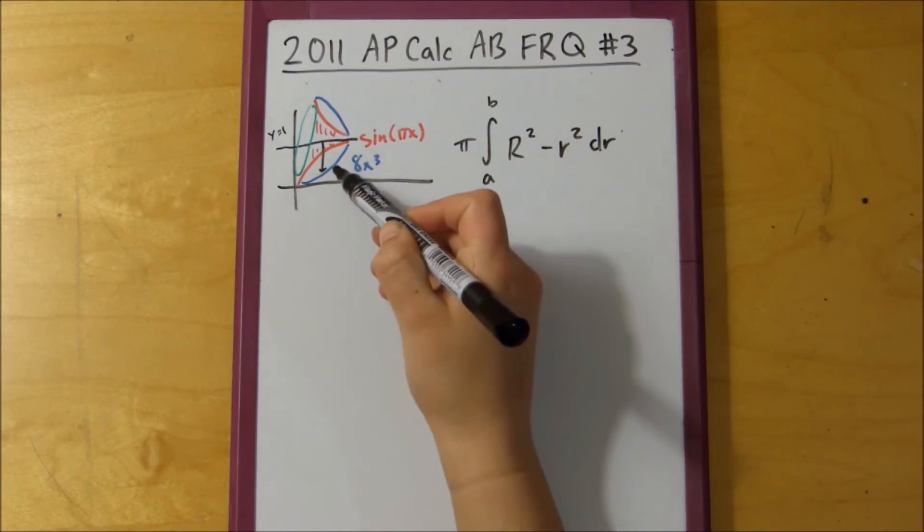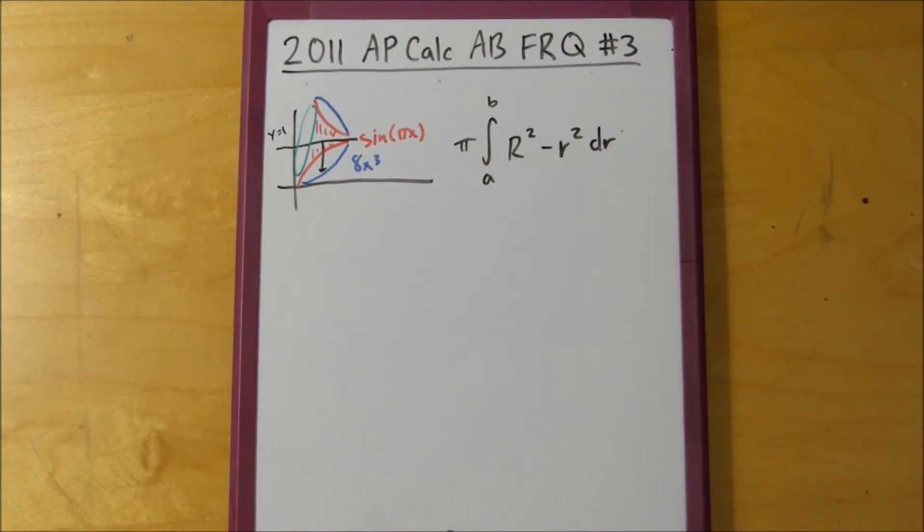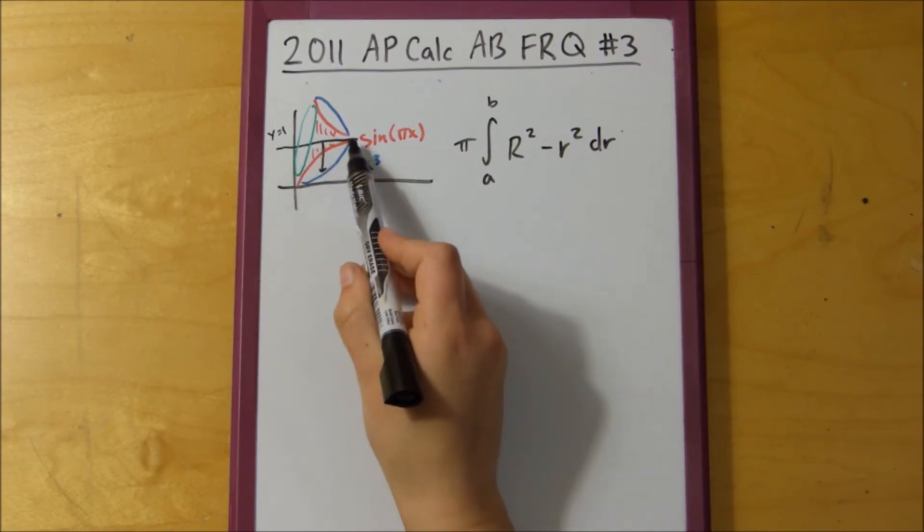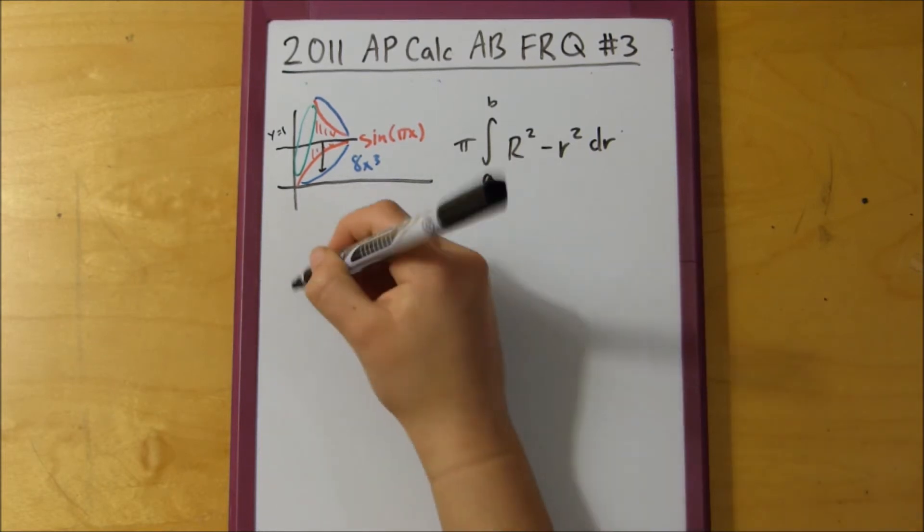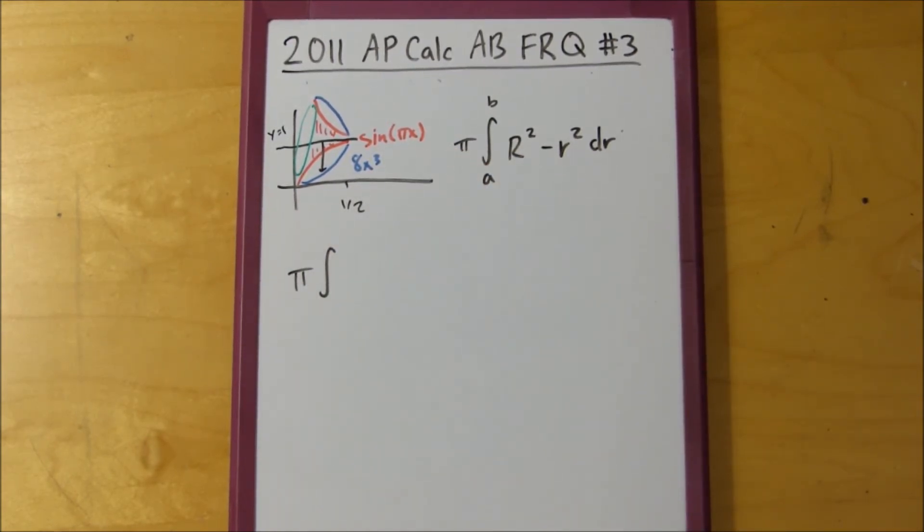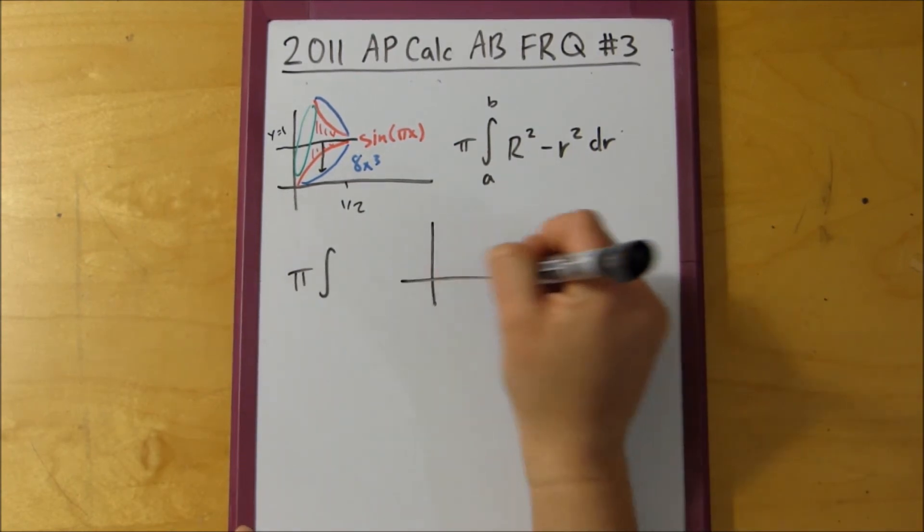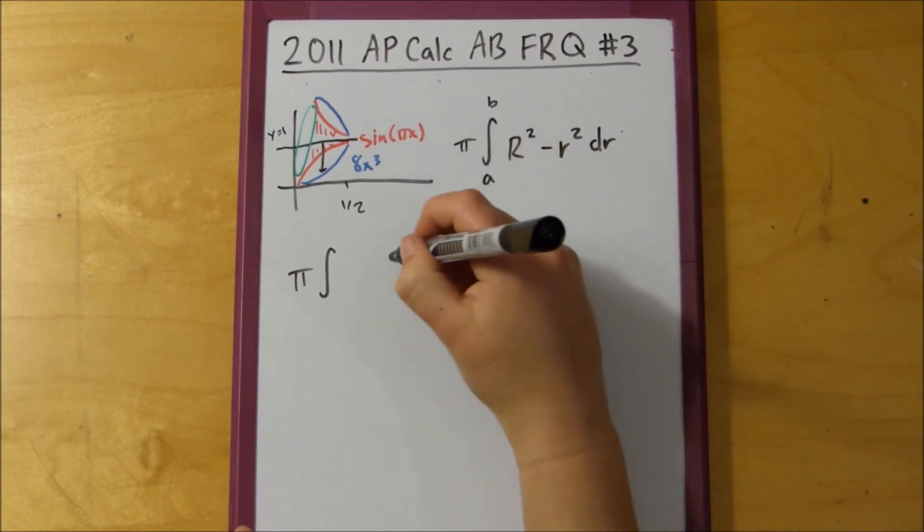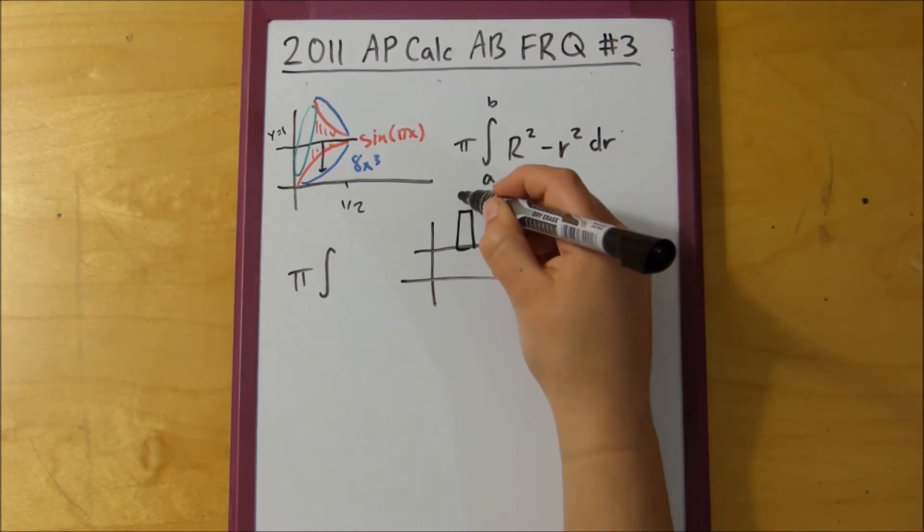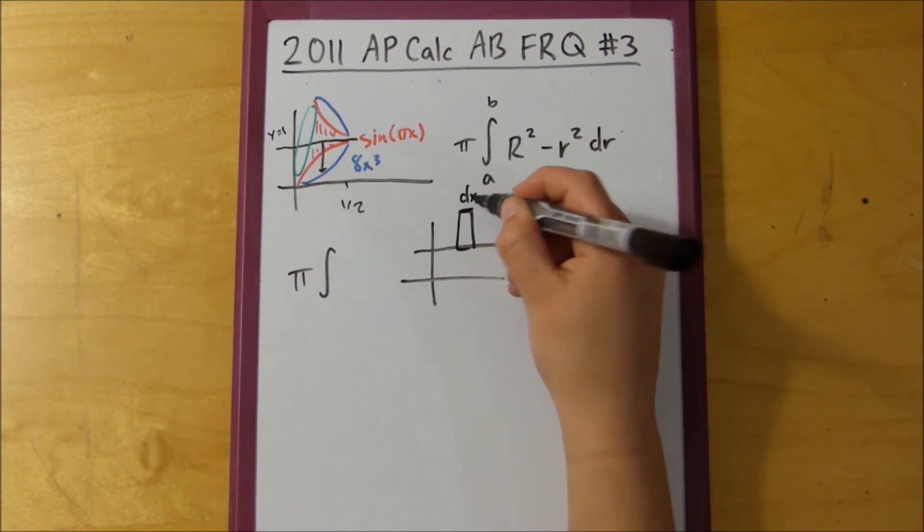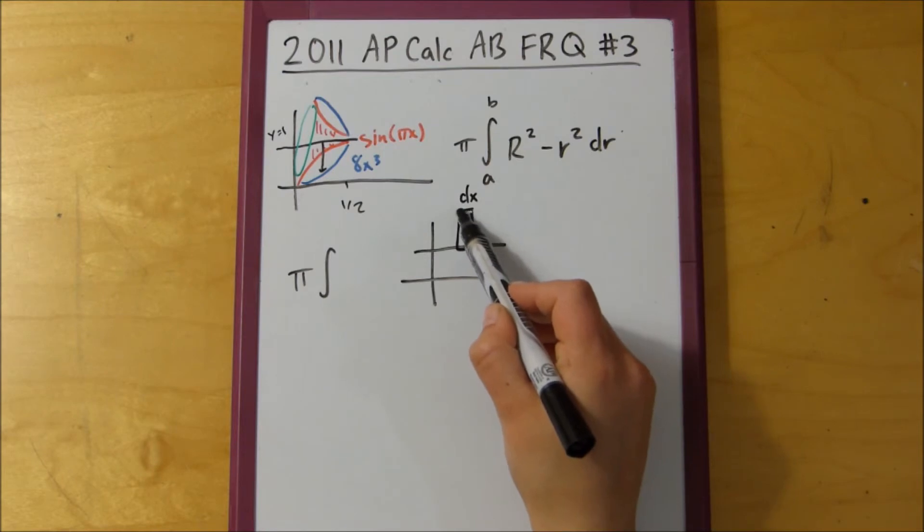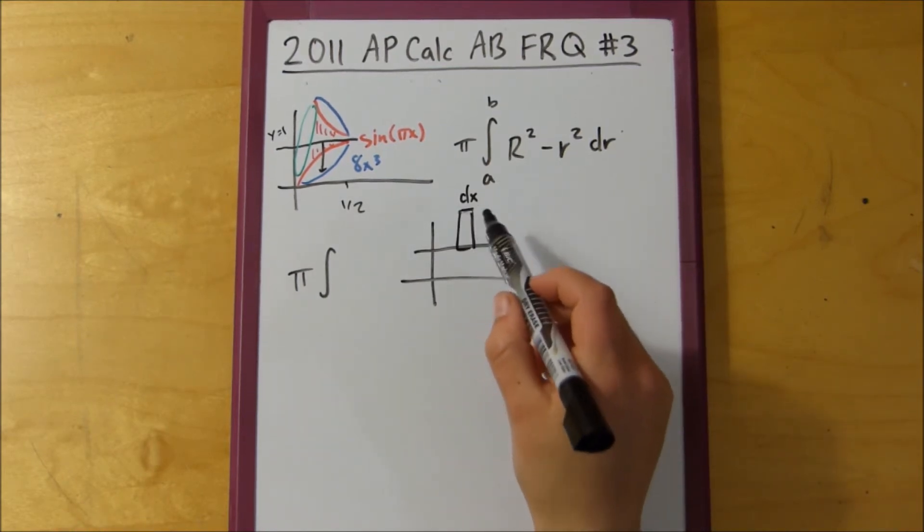Then we basically do the same thing that we did for our area. We want to find this area and then just square it. So our top function would be y equals 1, and then our bottom function is 8x cubed. So from 0 to 1 half, because this is in terms of dx. The way I like to think about it is, since the line that we're revolving around is horizontal, we're going to want to draw a rectangle perpendicular to that, and we know that this here is our dx. That's the way I always memorize it, is just the rectangle, and then whichever thing represents this, either dx or dy, that's what you want to write everything in terms of.